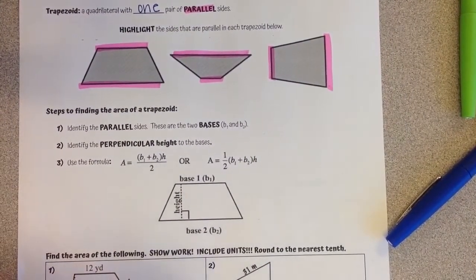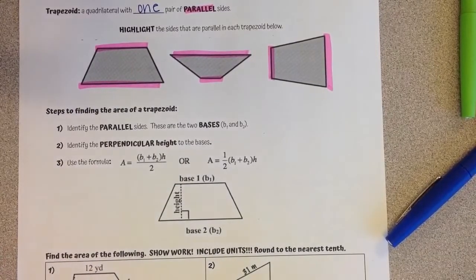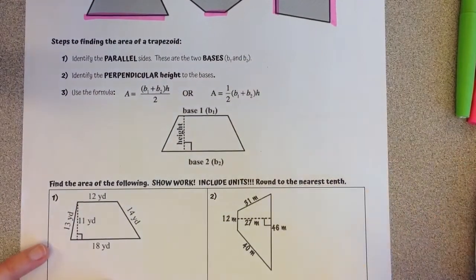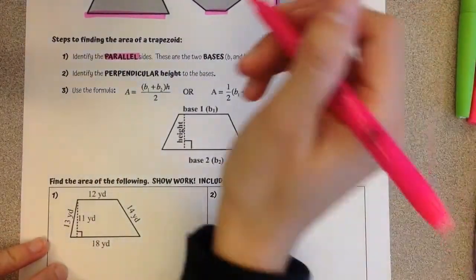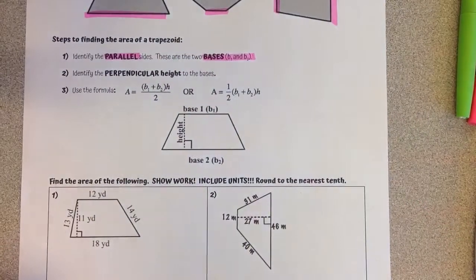Steps to finding the area of a trapezoid. Our first step is going to be to identify those parallel sides. These are our two bases, our base 1 and our base 2.